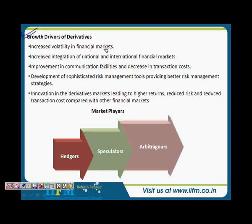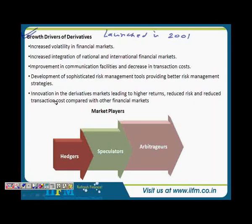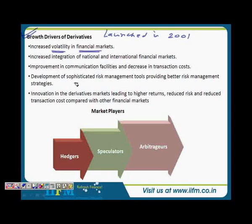On a theoretical slide, we will understand the growth drivers of derivatives. Derivatives were launched in India in 2001, and within a span of less than 10 years the volumes overtook that of the cash segment. One major factor is increased volatility in financial markets — derivatives are instruments to hedge exposures, so whenever there is huge volatility in the spot or cash market, you see huge volumes in the derivatives market because people want to hedge their risk.